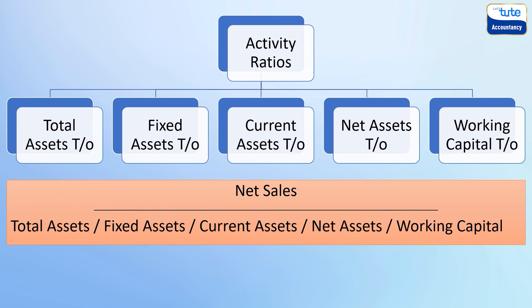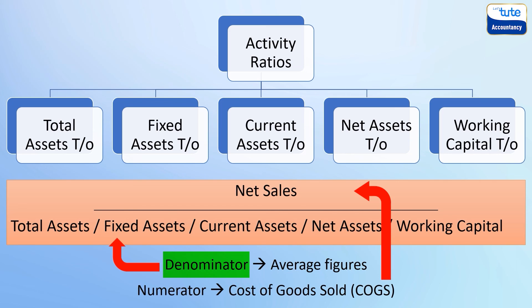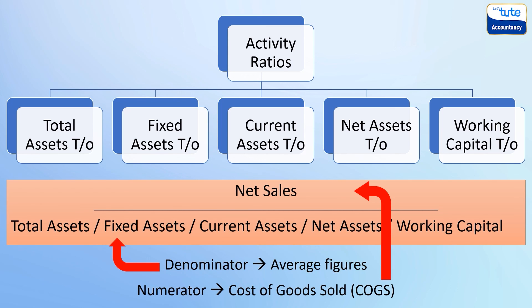So friends, these are all the activity ratios or turnover ratios discussed in this session. In their formula, the numerator remains the same — that is net sales — and the denominator keeps changing depending on the type of ratio. Also note that in all the ratios discussed today, the denominator can also be the average figure. Some analysts also consider the cost of goods sold figure instead of the sales figure, or COGS is taken when the sales figure is not available.